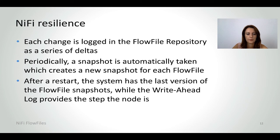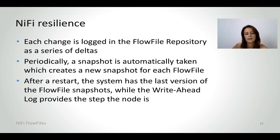Periodically, a snapshot is automatically taken, which creates a new snapshot for each flow file. So after a restart, the system has the last version of the flow file snapshots, while the write-ahead log provides the steps in between. Putting everything together, the system is able to restore the previous state before a shutdown or if something happened with the machine. After a successful restart, everything will be put in place and the system will know how to continue.